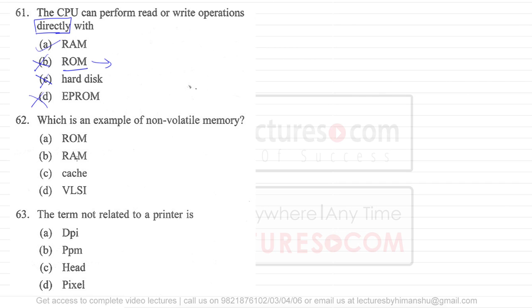So CPU can only write on RAM. Question number 62 says which is an example of non-volatile memory. Now when I am saying non-volatile memory that means when you turn off the system then the memory should not wipe off.